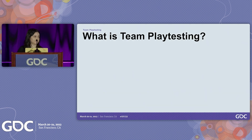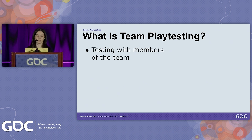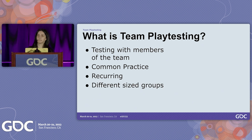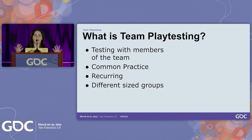What is team playtesting? At its core, team playtesting means you're testing with members of the team, as opposed to people outside your team like your players. It's often a common practice in studios and game teams, often recurring — such as happening weekly or monthly. It can be done with different sized groups: sometimes just two to three people actively working on something, or with the whole team including people who haven't seen what you're working on before. In my experience, we always have at least a team-wide playtest that happens weekly.